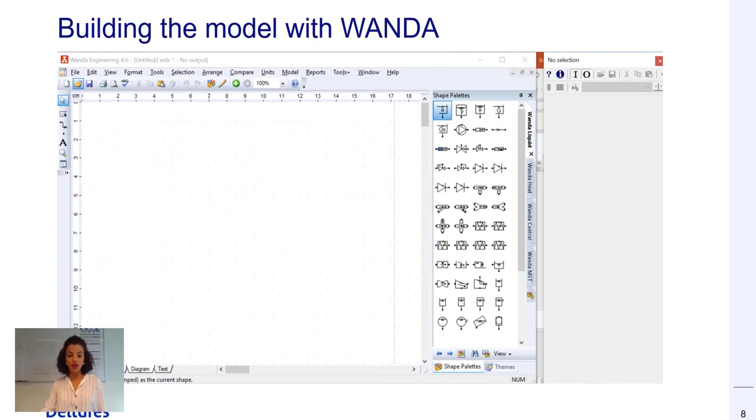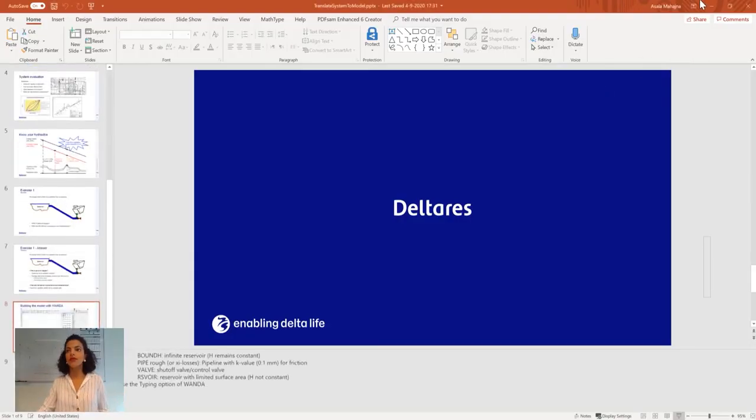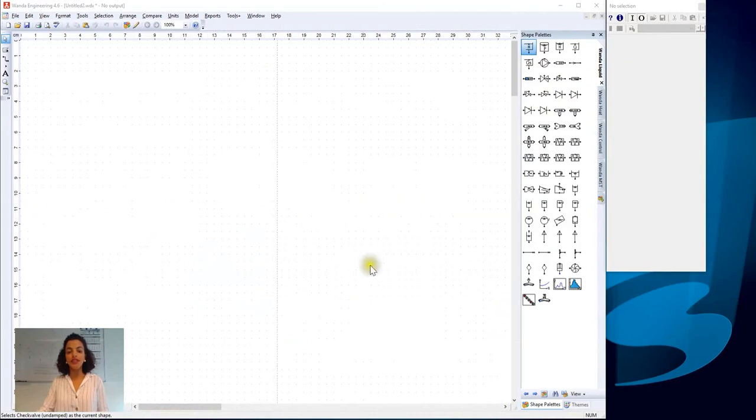Now let's go to Wanda and build this hydraulic model together. We start with an empty clean diagram. For the reservoir, we use a boundary reservoir.